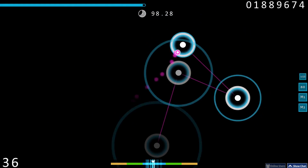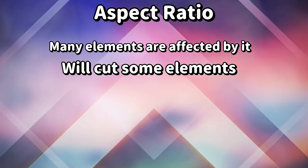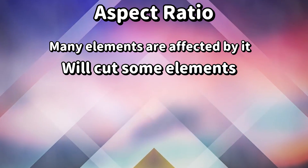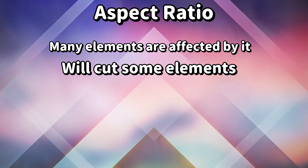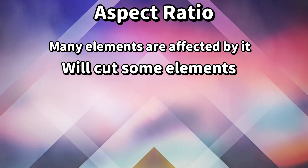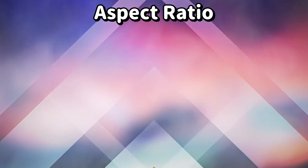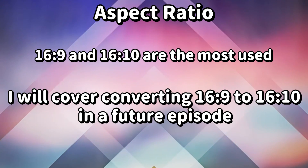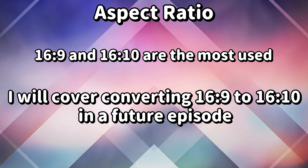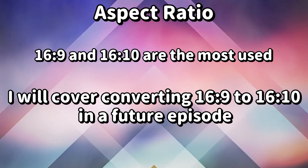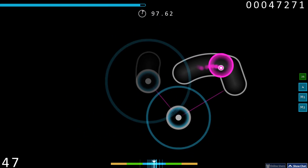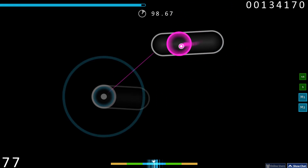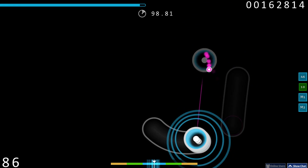Now onto aspect ratio. While the resolution doesn't really matter for the skin, the aspect ratio is really important. Some elements will need to be adjusted depending on the aspect ratio, and you really need to pay attention here because it does stretch your elements. I recommend skinning for 16:9 to 16:10 as they are by far the more commonly used aspect ratios. We'll cover how to convert a 16:9 skin to a 16:10 skin in the future, but we won't be covering 4:3 as the ratio has its own very specific and frustrating rules.